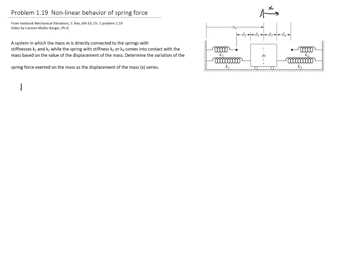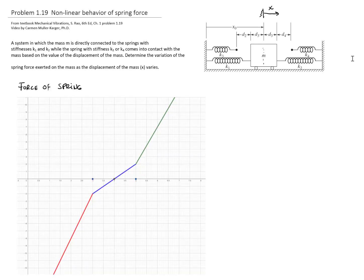If we graph the force of the spring, the force of the spring will be a piecewise function. So if we put the parameters of our function, this will be x sub 0, and my motion starts to be counted starting right here. This distance is d4. The system has to move d4 in order to touch the other spring, and the distance over here will be d2. It has to move d2 in the other direction to touch the other spring.